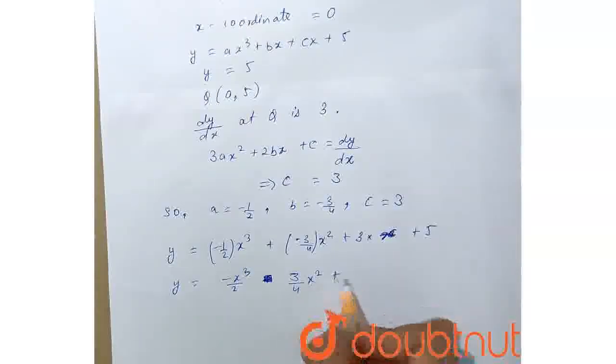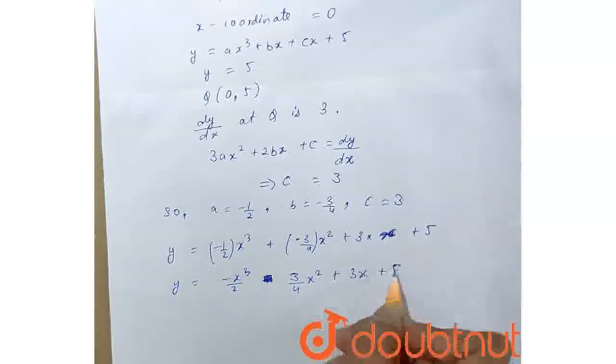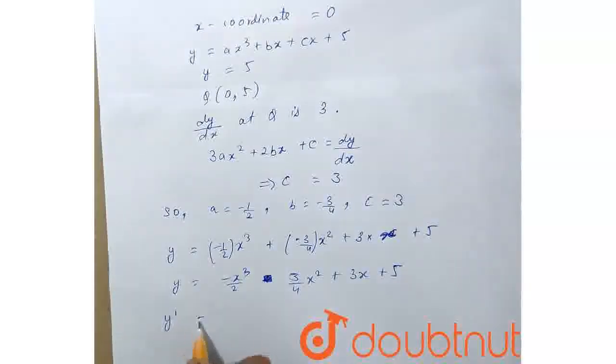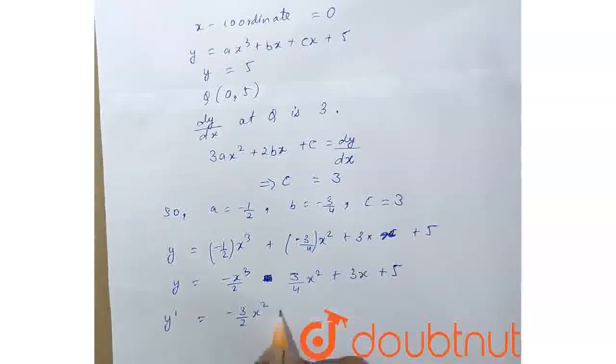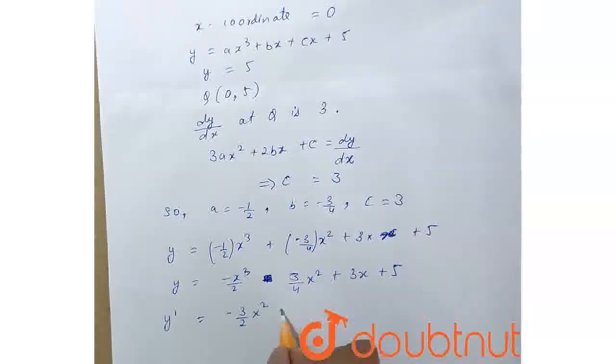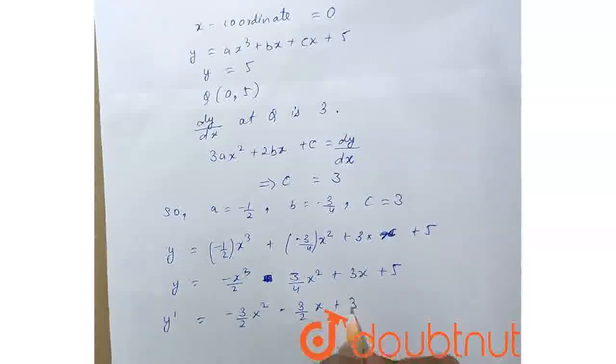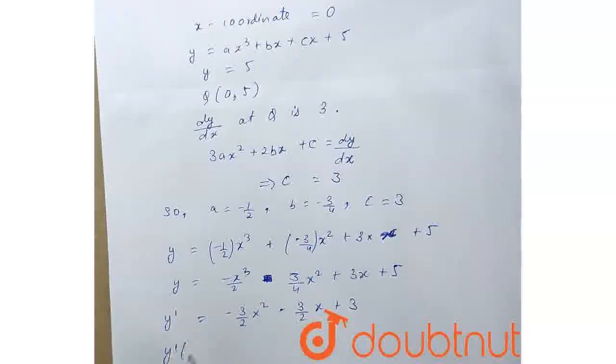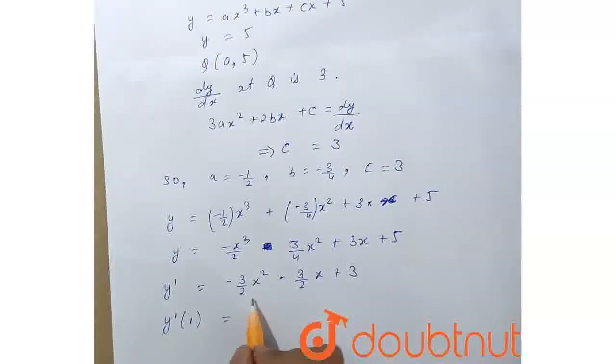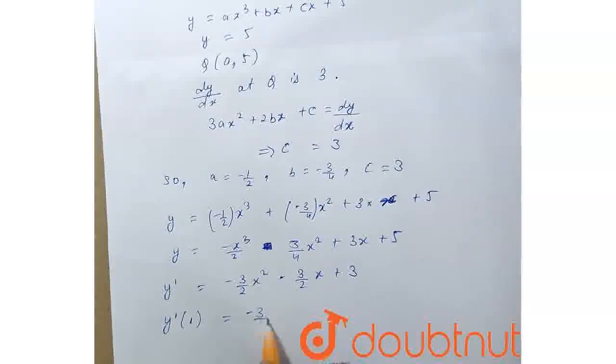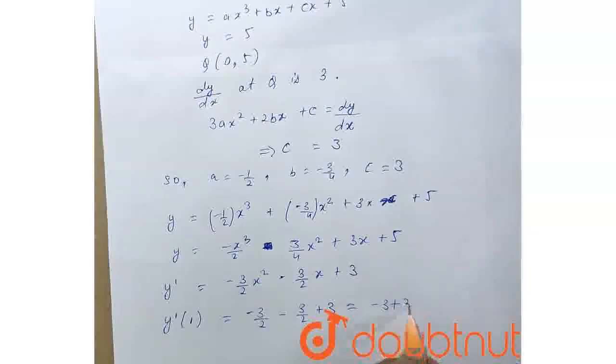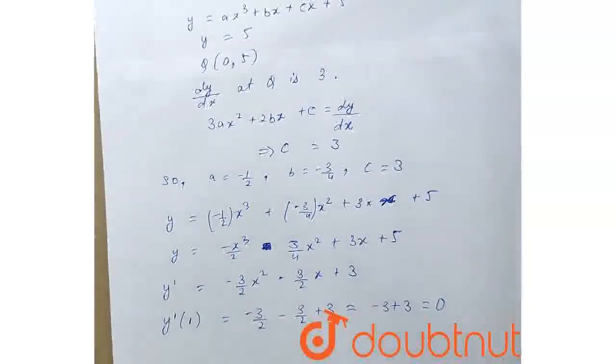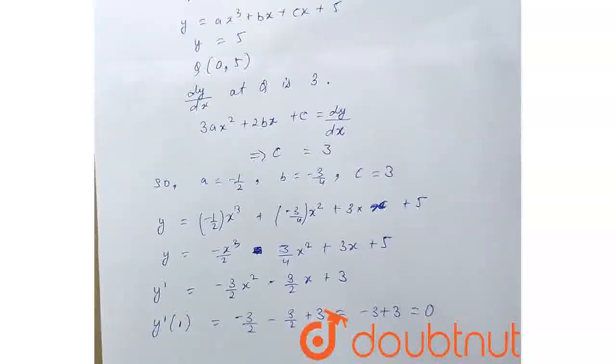We need to find its differentiation. Differentiate the equation: minus 3/2 x² minus 3/2 x plus 3. So y'(1), the question asks to find the value of this. We will get minus 3/2 minus 3/2 plus 3. This is minus 3 plus 3 equals 0.